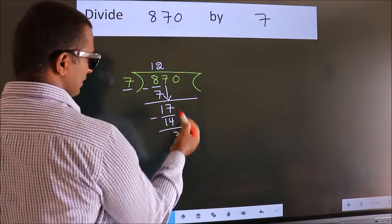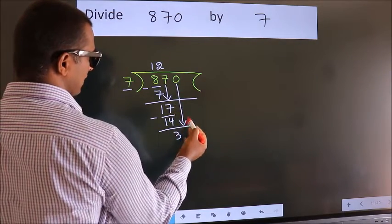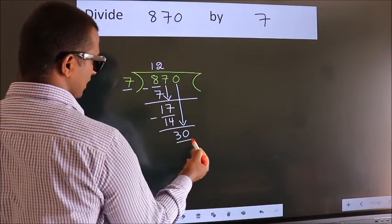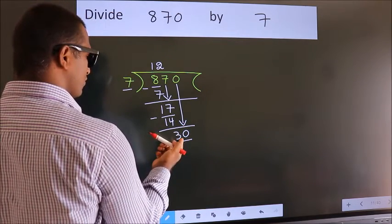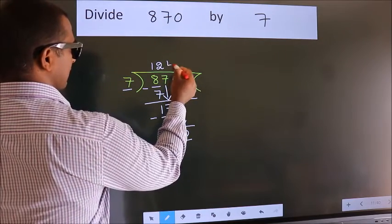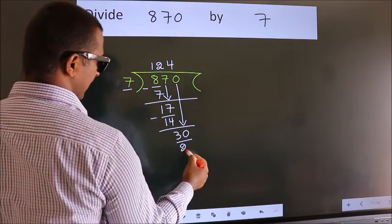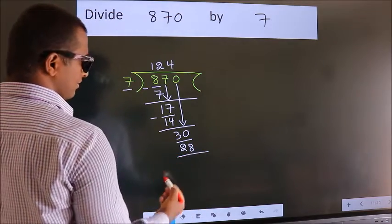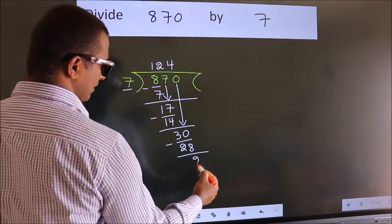After this, bring down the beside number, so 0 down, making 30. A number close to 30 in the 7 table is 7 fours, which is 28. Now we subtract and get 2.